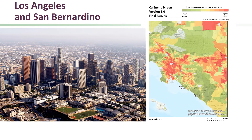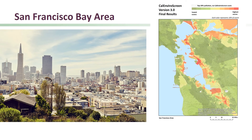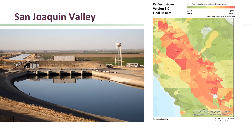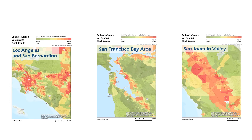Let's take a closer look at the results in different regions of California. This map shows the Los Angeles and San Bernardino areas. This map shows the San Francisco Bay Area. This map shows the San Joaquin Valley from Stockton down to Bakersfield. As you can see from these maps, CalEnviroScreen scores vary across different regions of the state.